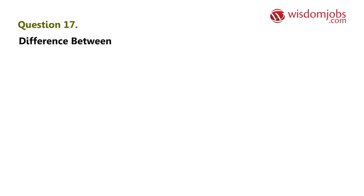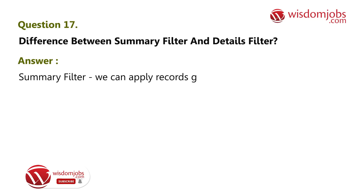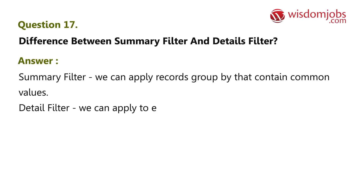Question 17: What is the difference between a summary filter and a details filter? Answer: Summary filter: you can apply it to records at a source group-by level that contain common values. Detail filter: you can apply it to each and every individual record in the database.